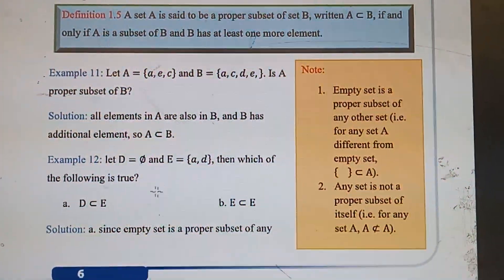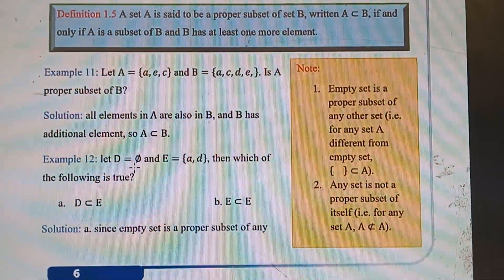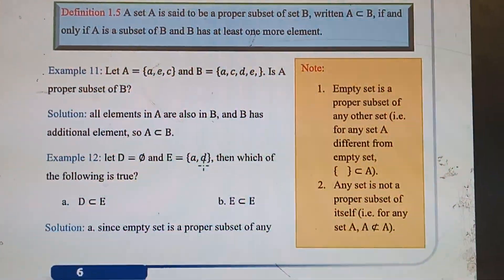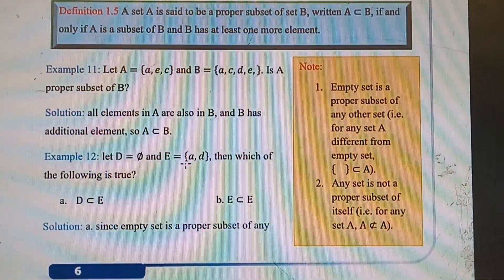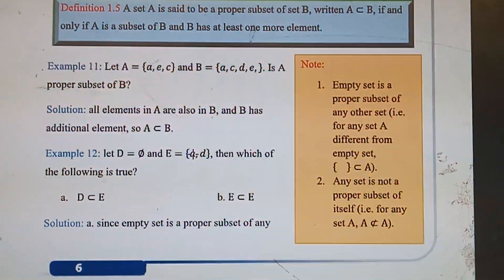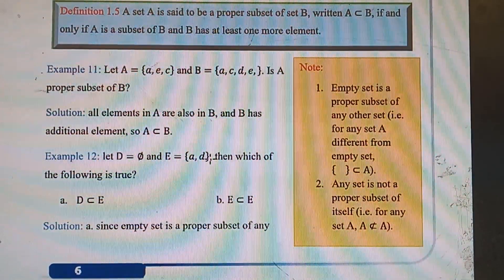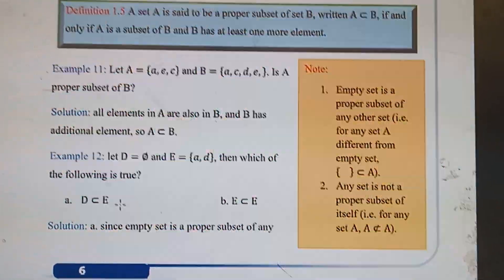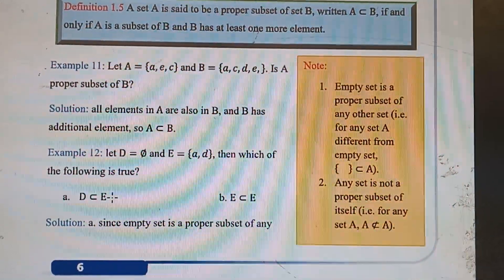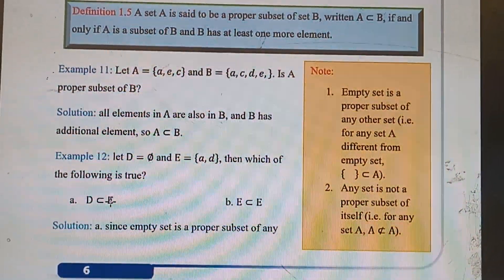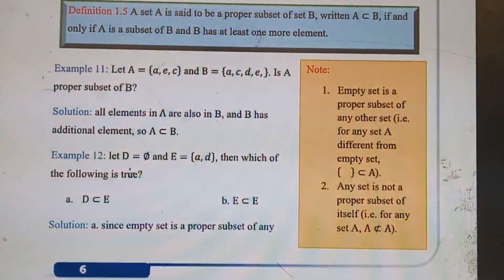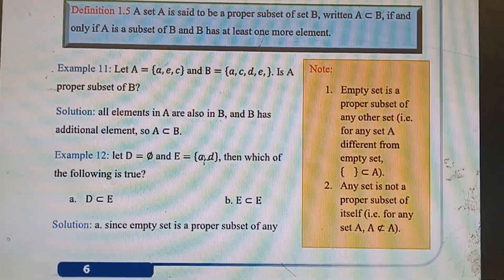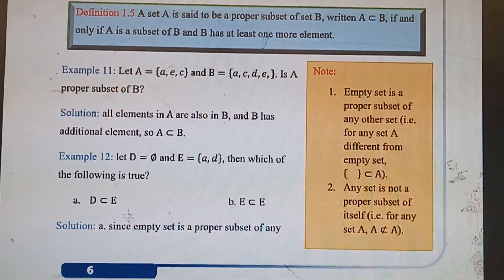Set D is the empty set, this is the symbol for empty set. Set E is the set {a, d}. D is a proper subset of E, that means set D is empty set, which has zero elements.